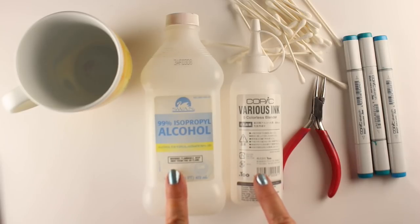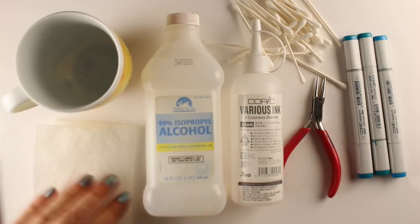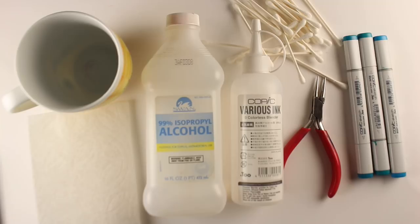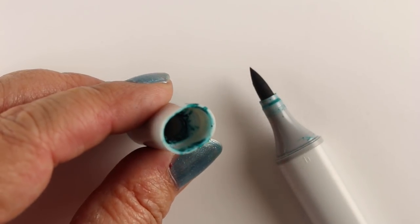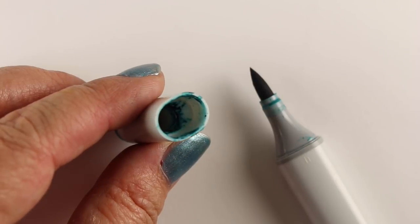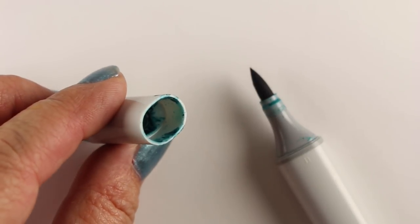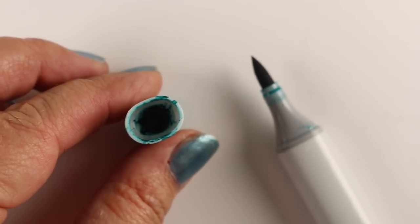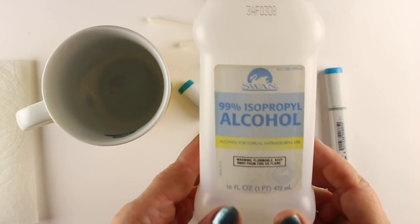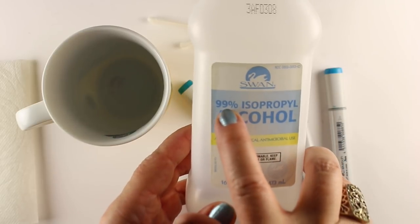You can use some rubbing alcohol in this one instance and use the 99% instead of using your colorless blender. Because the marker cap is all dirty on the inside, you can see how it might interfere with the seal. So if you have your markers drying out surprisingly a lot, then you might try cleaning even just that seal around the outside edge.